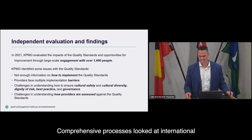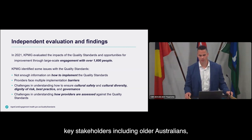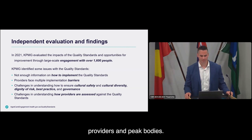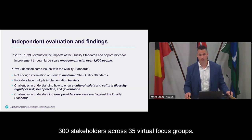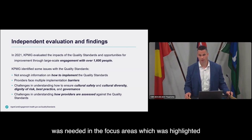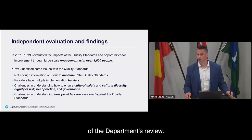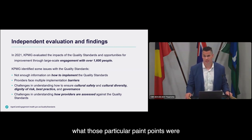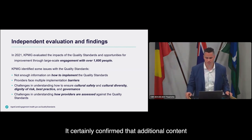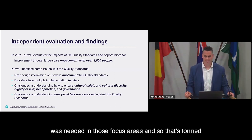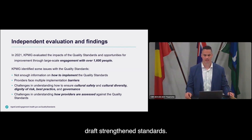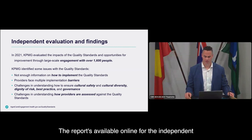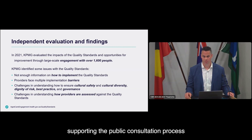The comprehensive process looked at international and local domestic research and consulted with key stakeholders, including older Australians, providers and peak bodies. We had nearly 1,400 participants complete online surveys and spoke to just over 300 stakeholders across 35 virtual focus groups. The process identified that additional content was needed in the focus areas highlighted by the Royal Commission, and this formed the basis of the department's review. The report is available online as a resource supporting the public consultation process.